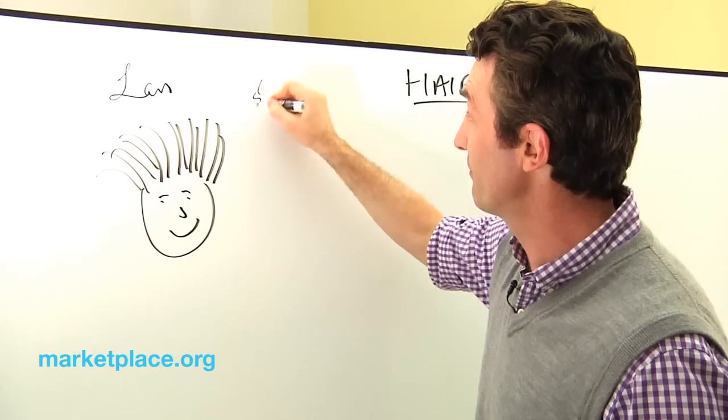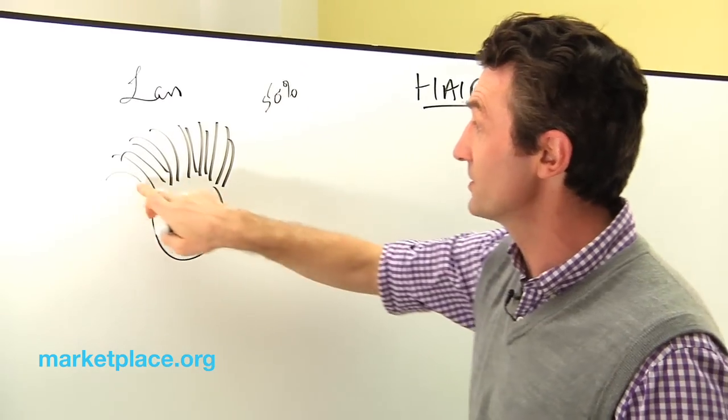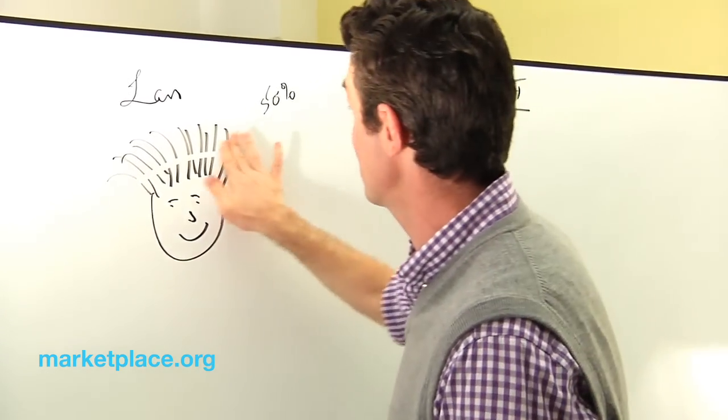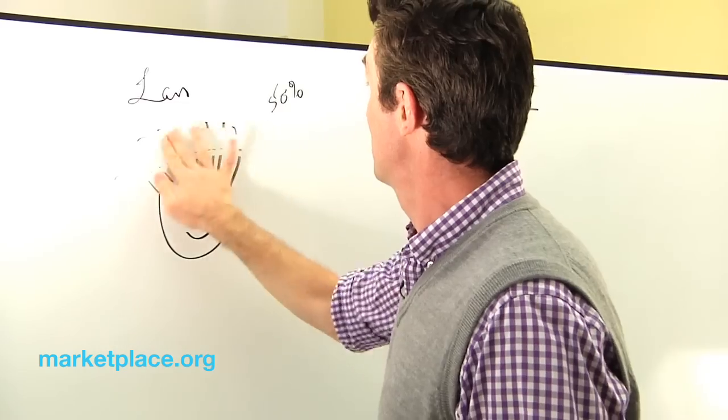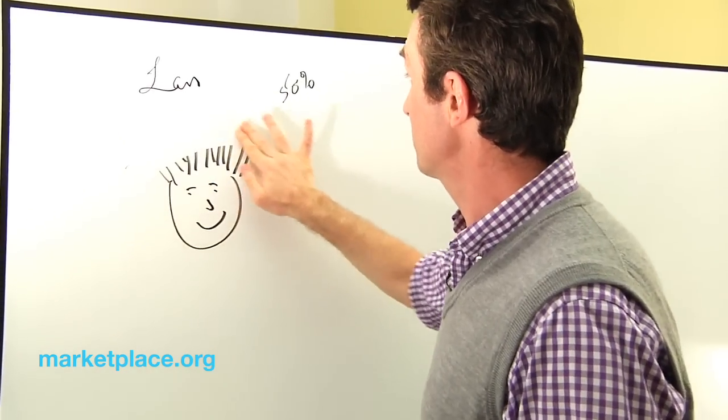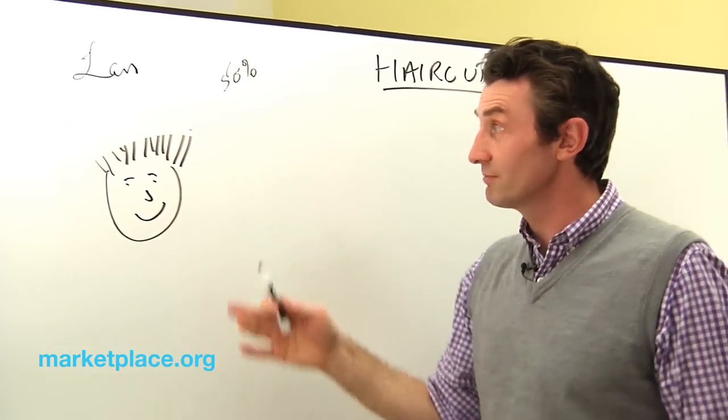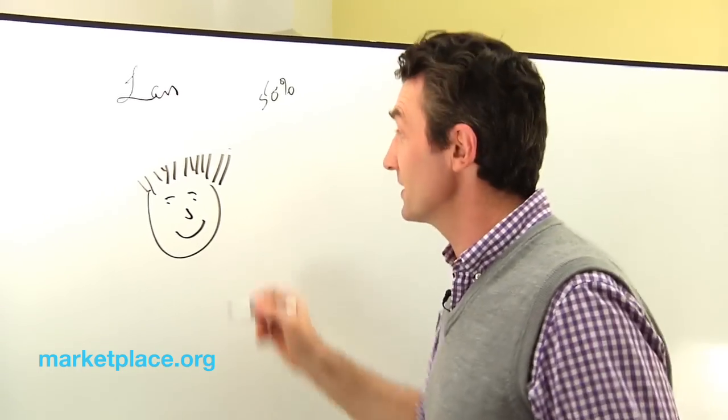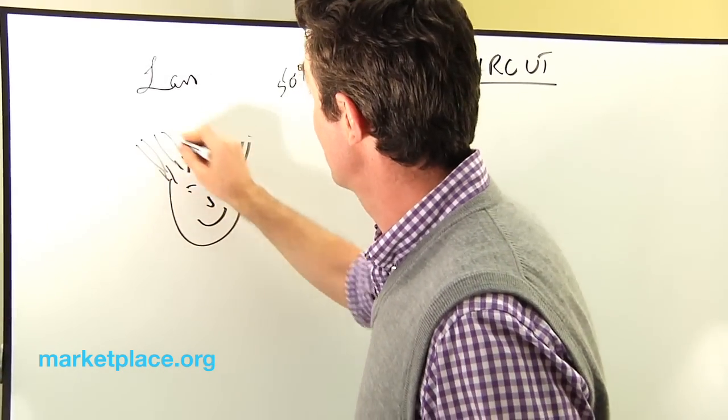So if Lars was going to get a 50% haircut, what this means is he'd basically lose, as you can see, 50% of his hair. So 50% of his hair is gone. But Lars is still smiling because, firstly, he's had a haircut so he looks nice and tidy. And secondly, he knows his hair is going to grow back.